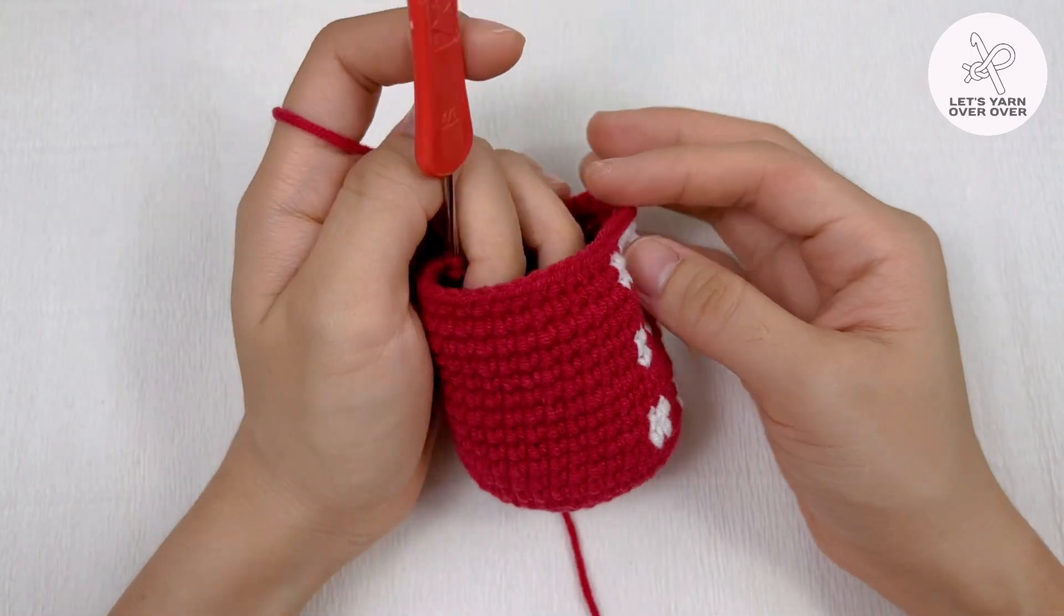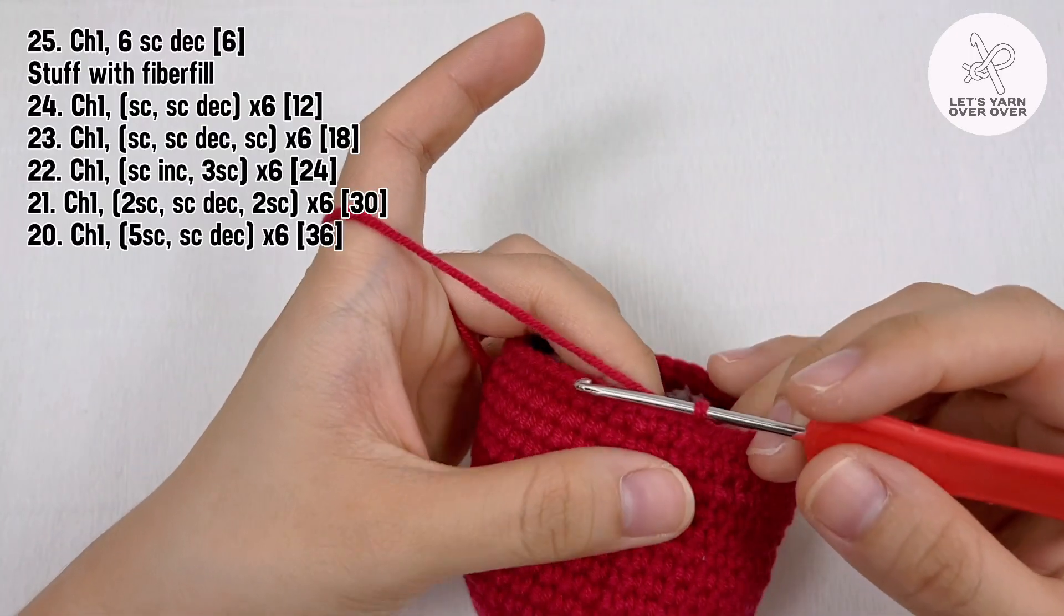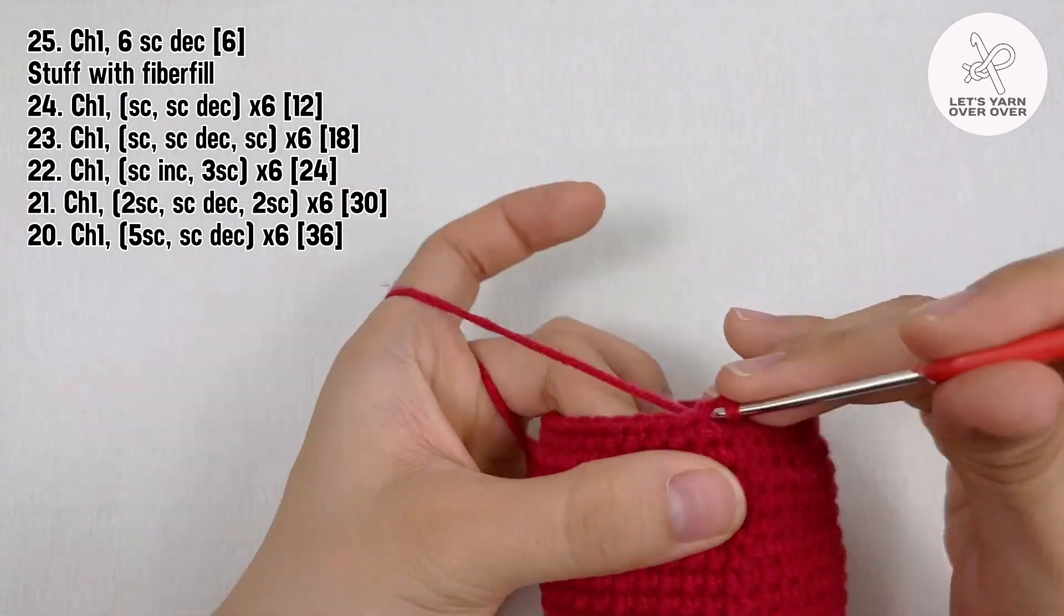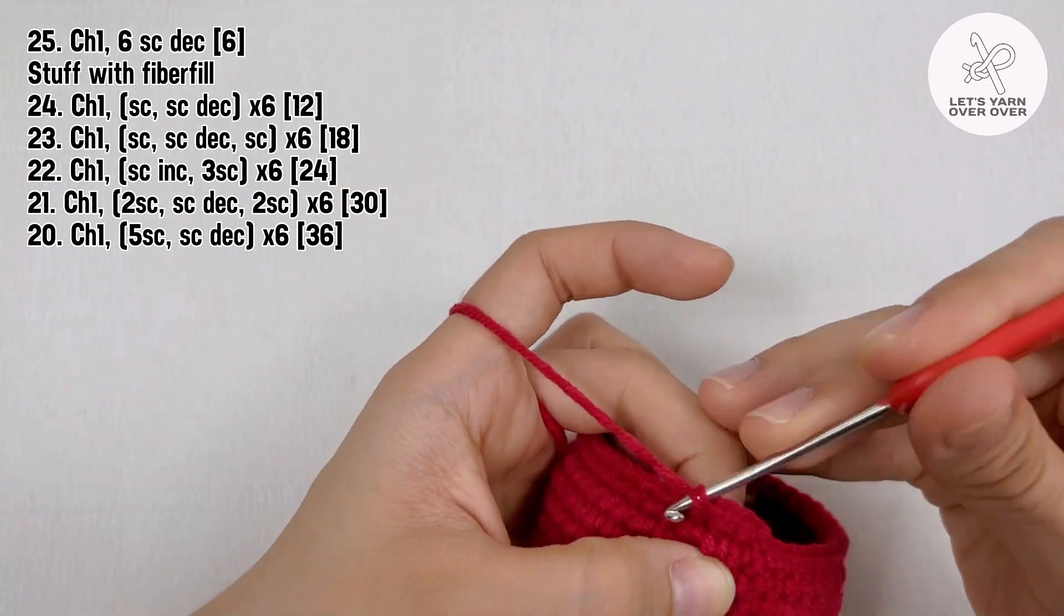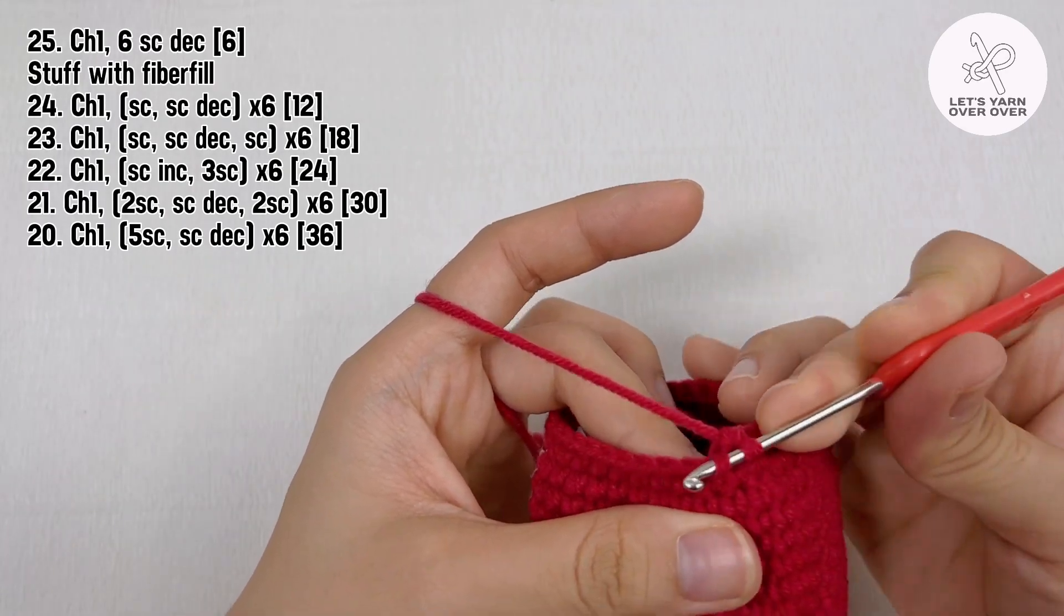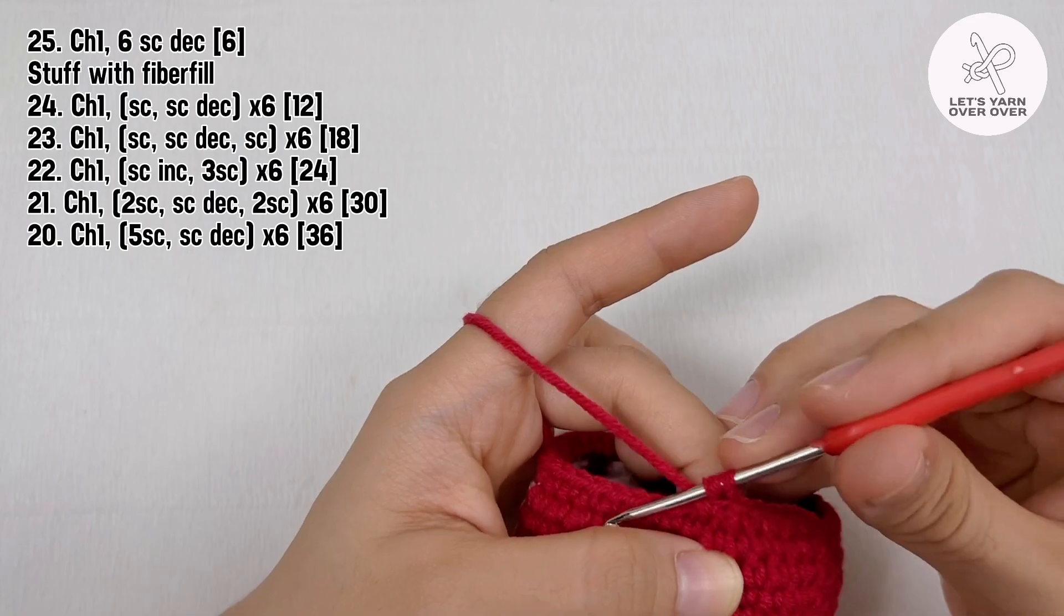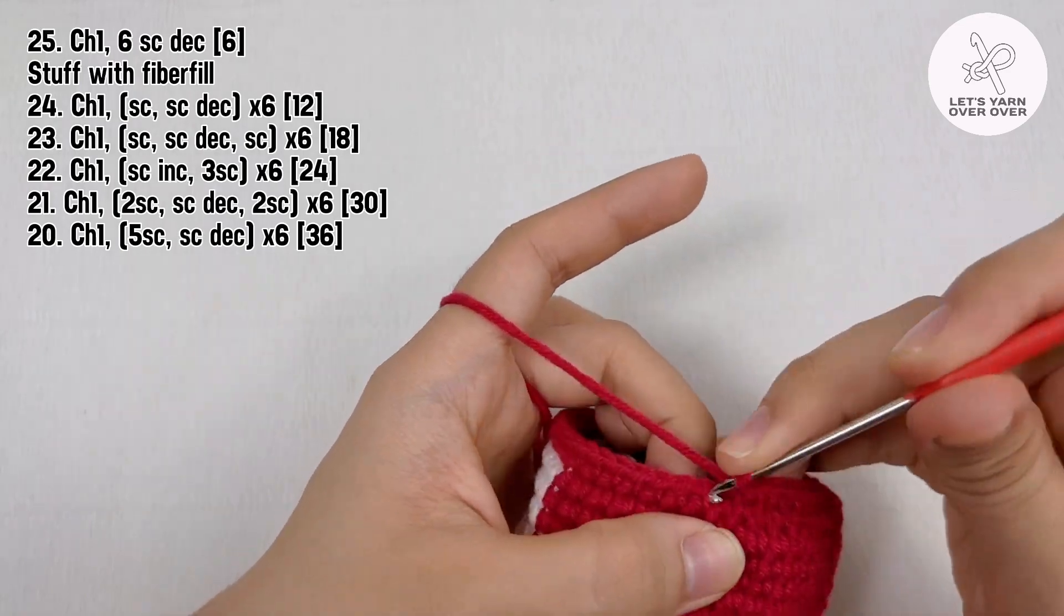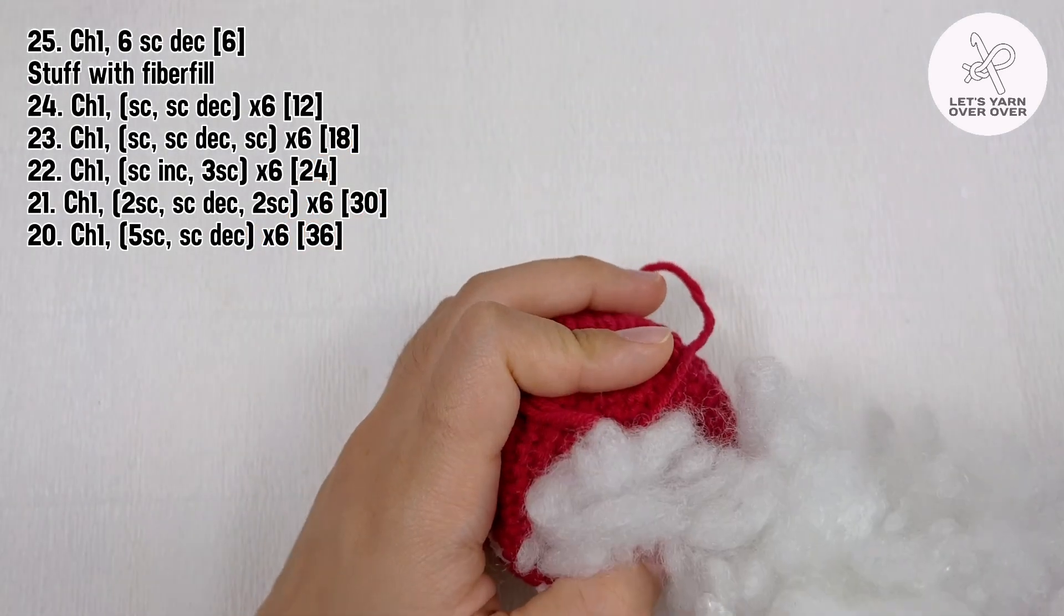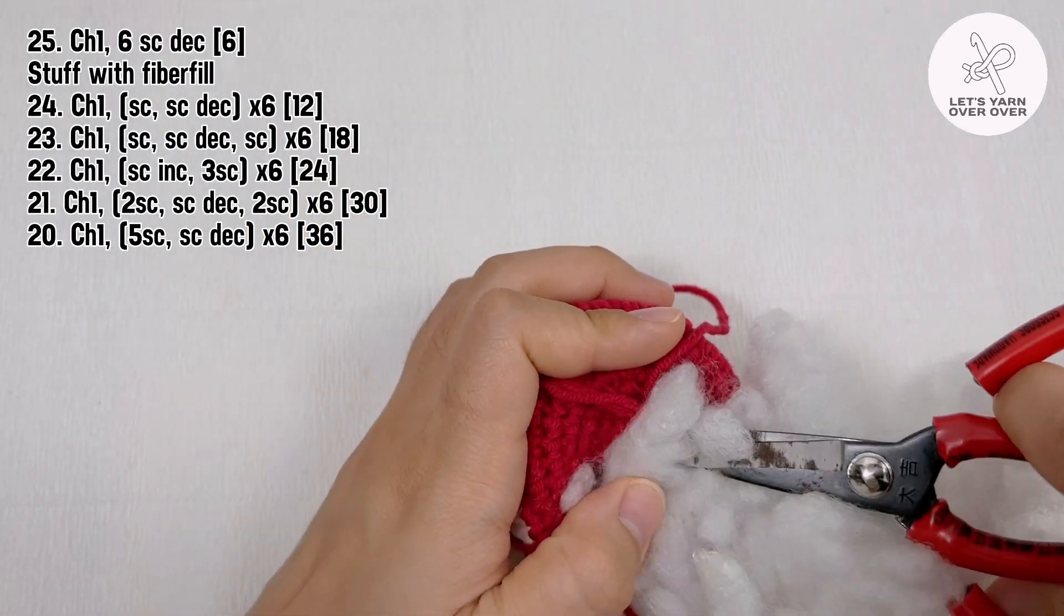For the last 6 rounds, I will decrease 6 stitches in every round. Before working the last round, stuff the ornament with some fiber fill, then fasten off and leave a tail for hanging.